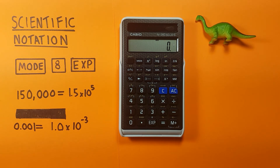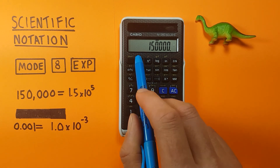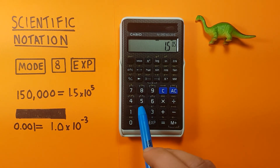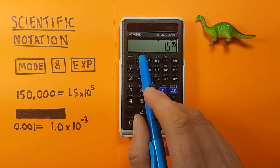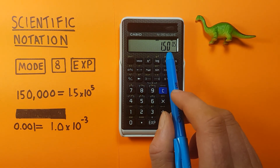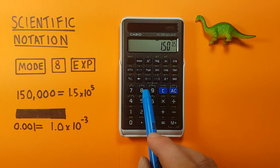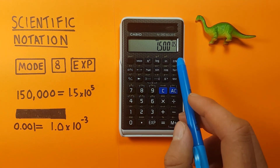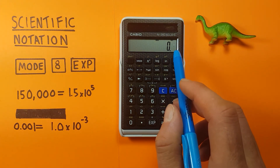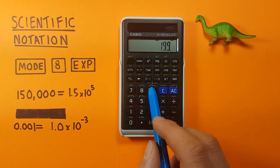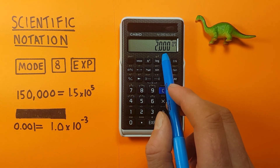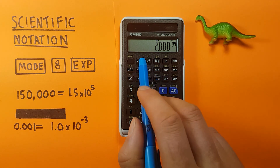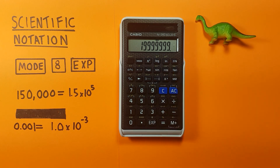We can also choose the number of sig figs we want. Take 150,000 again — convert it to scientific notation with mode 8, 2 for two sig figs as before. We can convert to more sig figs: mode 8, 3 gives 3 sig figs; mode 8, 4 gives 4 sig figs. We're still in scientific notation mode, so if we enter a large number like 199,999 and press equals, you can see it's rounded with 4 sig figs. To exit, press mode 9 to go back to normal mode.